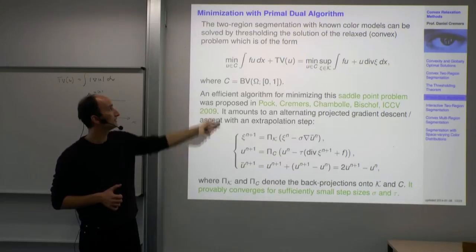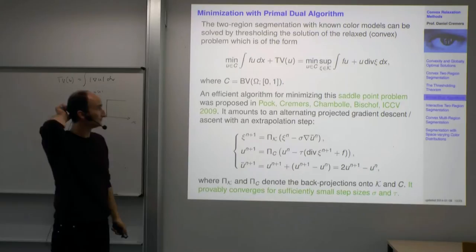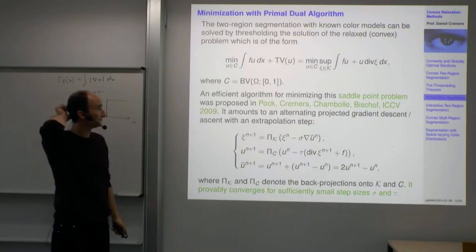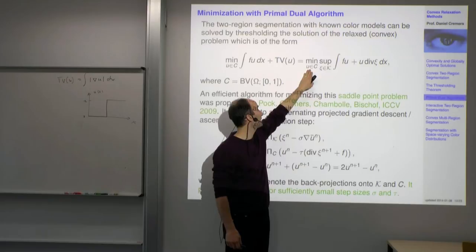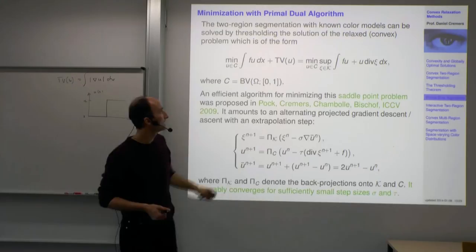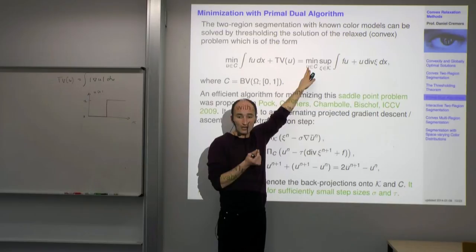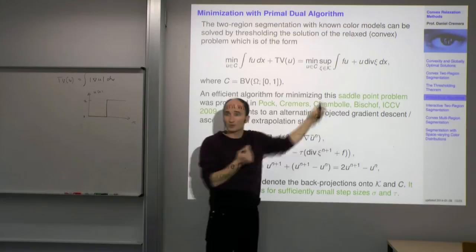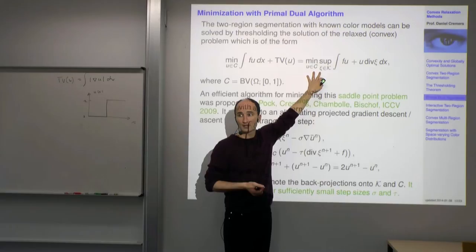We detail the primal-dual algorithm for a functional with one term linear in U and one total variation term as the regularizer. We minimize in the primal variable U and maximize in the dual variable using gradient descent techniques. Since we have two sets of variables — primal and dual — and U is a function, in practice you have a value of U for each pixel, and two values of the dual vector for each pixel as well.